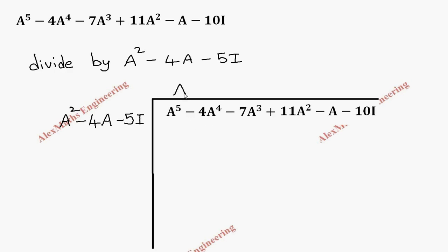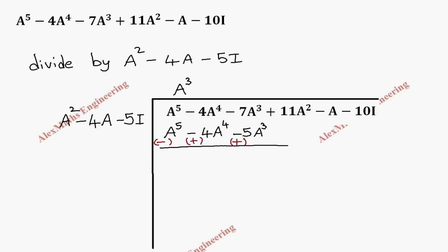Setting up the long division with divisor A² minus 4A minus 5I. Multiplying A³ by A² gives A⁵. A³ times minus 4A gives minus 4A⁴. A³ times minus 5I gives minus 5A³. After subtraction, A⁵ terms cancel, minus 4A⁴ terms cancel, leaving minus 7A³ plus 5A³ equals minus 2A³. We carry down plus 11A² minus A.